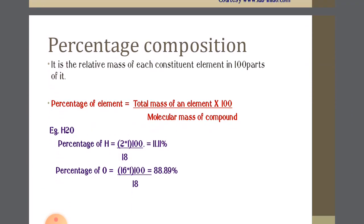Percent composition is the relative mass of each constituent element in hundred parts of the compound. So in a hundred parts of the compound, how much percent of a particular constituent is present — that is of 100. The percentage of an element is given by the formula: percentage = total mass of element upon the molecular mass of the compound, multiplied by 100.